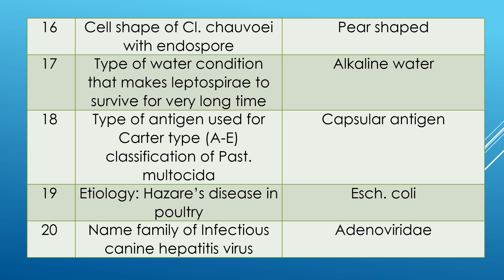Question 17: type of water condition that makes Leptospira survive and grow for a very long time. Answer is alkaline water. Question 18: type of antigen used for Carter type A to E classification of Pasteurella multocida — frequently asked question. Answer is capsular antigen was used for the classification of Pasteurella multocida.